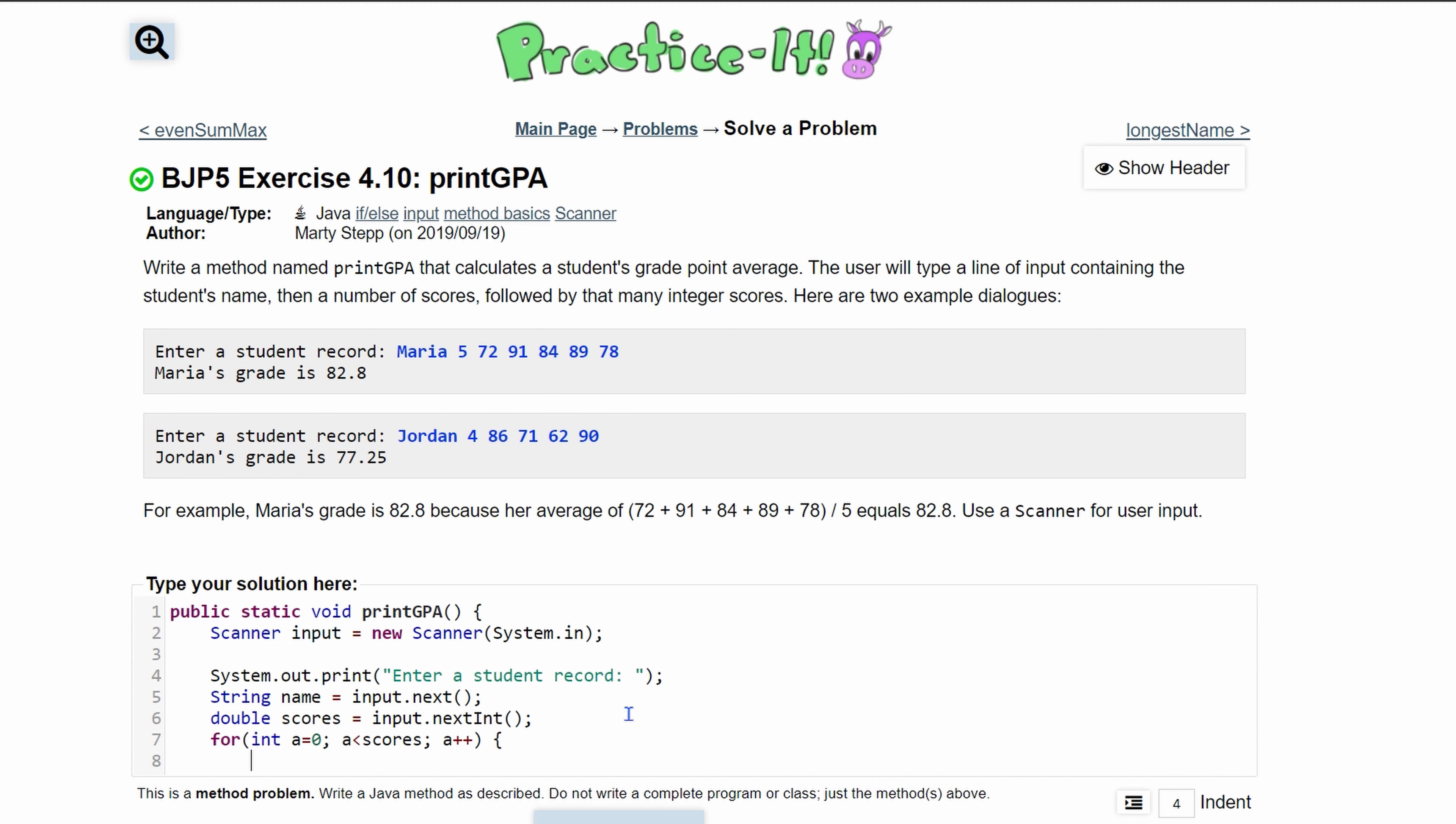Inside of here, all we need to do is add to our overall grade. We're going to use a grade variable and we'll make it outside of our for loop. So we'll do double grade and initialize it to zero.